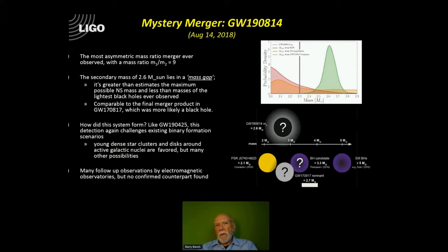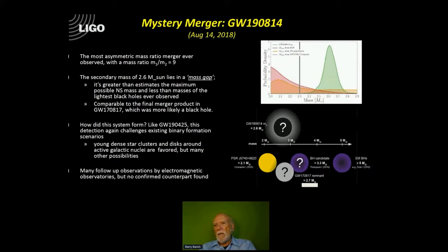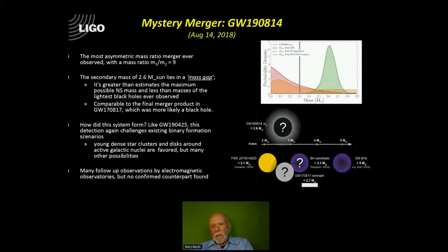We also have an event with high asymmetry — a factor of almost 10 between the masses of the two objects. That's very useful for understanding relativity issues, because it's very difficult to calculate numerical relativity when the mass ratio gets very high. In the case of this big difference, the secondary mass comes out 2.6 times the mass of the sun, which is in the same mass gap. We can look forward to exploring whether there really are objects landing in between the mass of neutron stars and the mass of black holes.